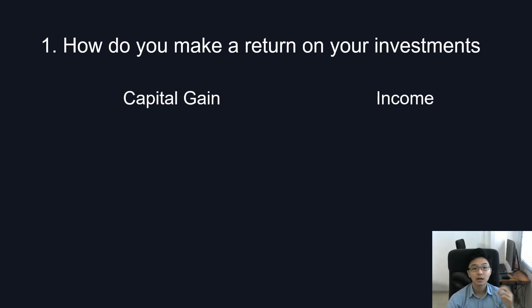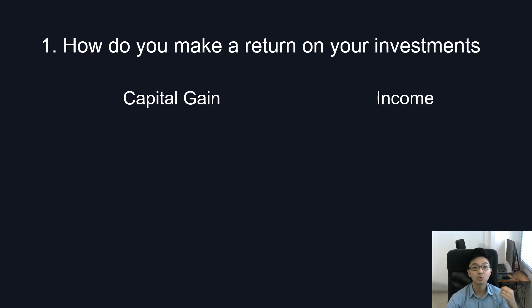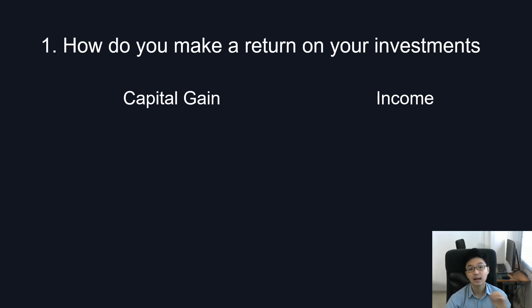Essentially, capital gains refers to the increase in the price of an asset when it is sold. There are two main forms of capital gains: speculative capital gains and fundamental capital gains.